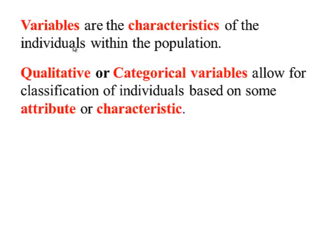Qualitative, or sometimes known as categorical variables, allow for some classification of individuals based upon some attribute or characteristic. For example, eye color, favorite type of music, the town that you live in. All these are categories.